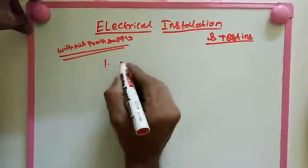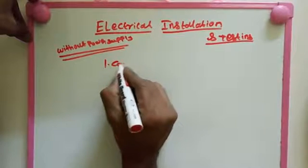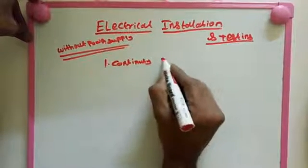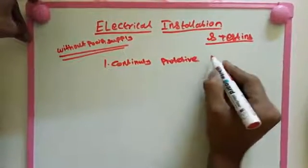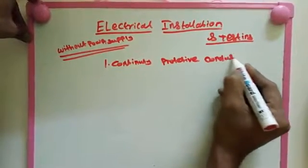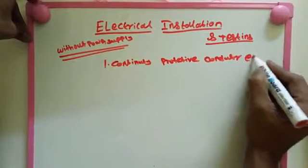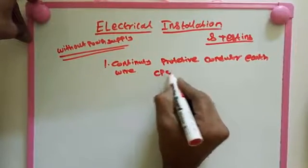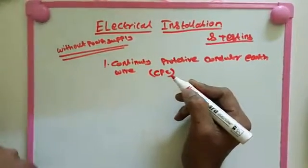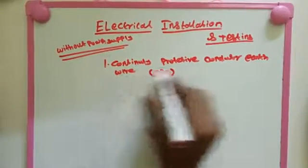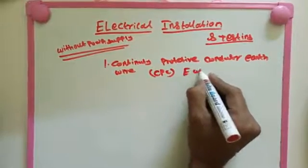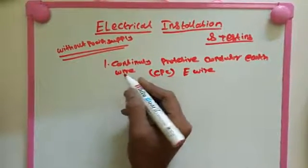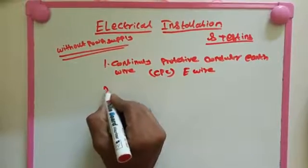So without power supply, first one is we need to check continuity of protective conductor. So this one is we need to check earth wire. This is the first step to check the electrical installation.